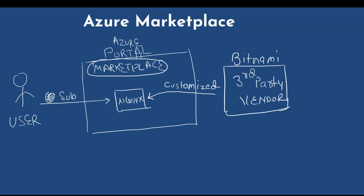Let's have a look at Azure Marketplace. Azure Marketplace lets you purchase Azure-based solutions and services from third-party vendors using the Azure portal. For example, you might subscribe to an Nginx machine image from the Azure Marketplace — a customized image provided by a third-party vendor such as Bitnami — that includes Nginx Plus along with pre-configured Prometheus and Grafana.